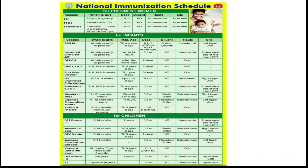OPV 0 dose — the birth dose of Oral Polio Vaccine — is given at birth, as early as possible, with a maximum age of within the first 15 days after birth. The dose is 2 drops, oral route. BCG, Hepatitis B, and OPV 0 are all three vaccines given at birth.